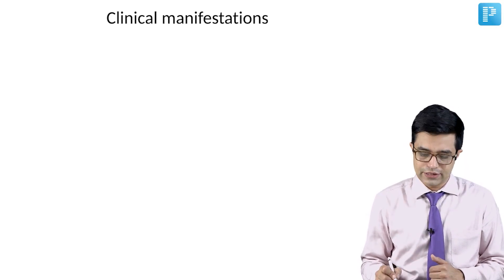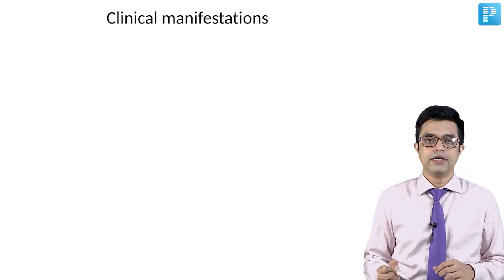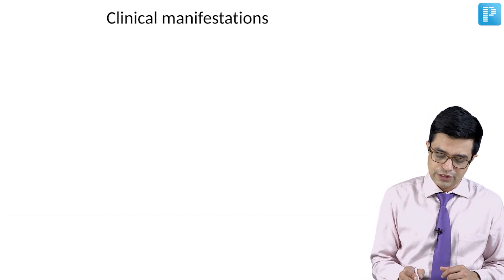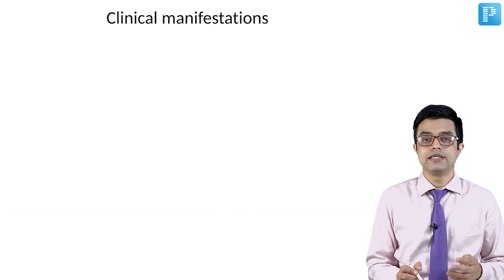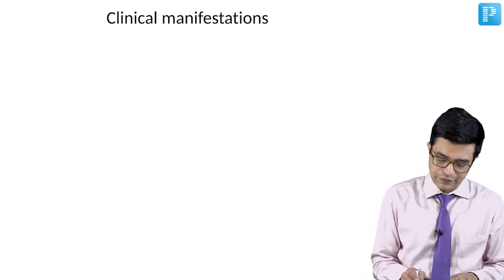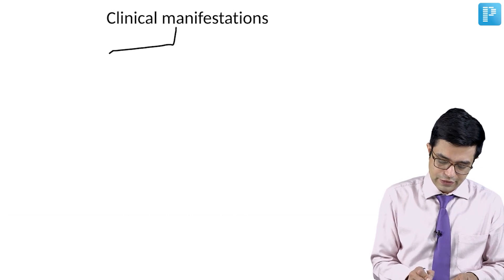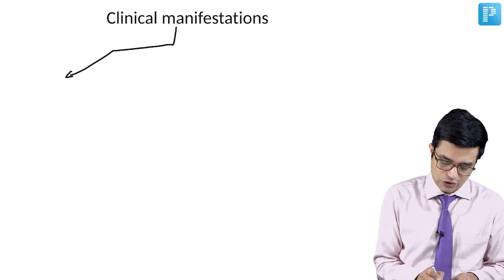Let us talk about the clinical manifestations of homocystinuria. The clinical manifestations of homocystinuria can broadly be subdivided into four categories. You can have manifestations like ocular features.